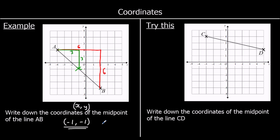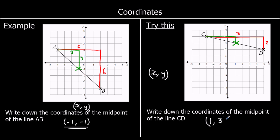One for you to try: give this one a go — write down the coordinates of the midpoint. To get from C to D the whole line, we go along 8 and down 2. If we want the midpoint, we go half as far. Half of along 8, down 2 is along 4 and down 1. So this is our midpoint. Its x-coordinate is 1 and the y-coordinate is 3, so the midpoint is (1, 3).